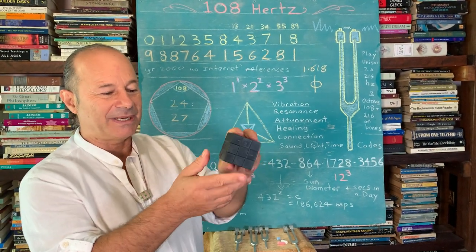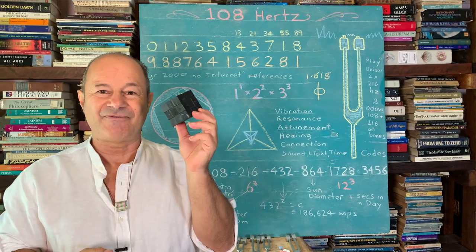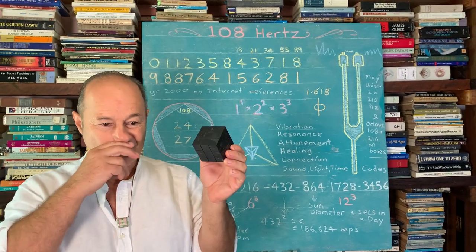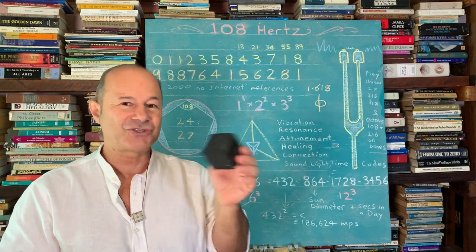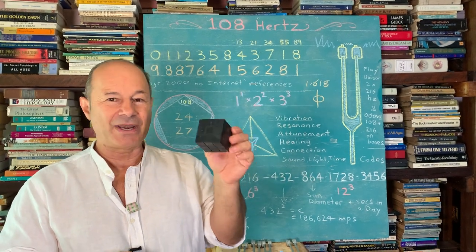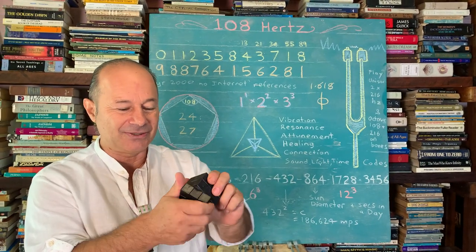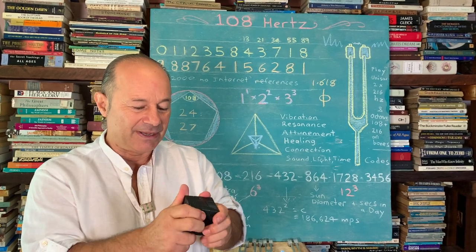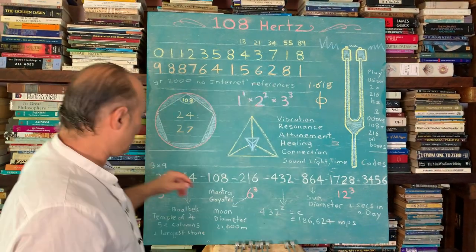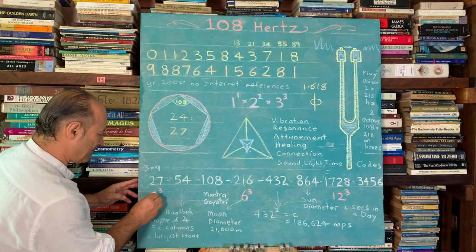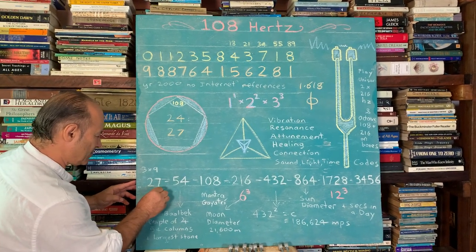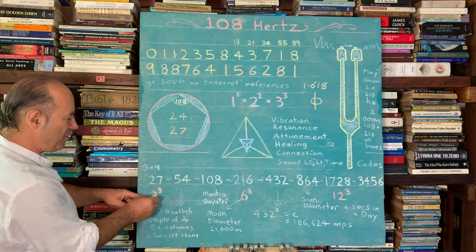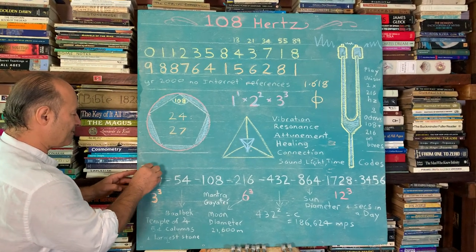27 is also 3 cubed. By having this Rubik's Cube, which is the most fundamentally loved toy in the history of toy making, people resonated to these movable parts and the number 27. We can think of 3 cubed as three lots of 9 as well.